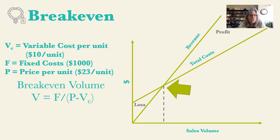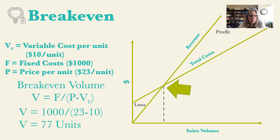What volume gives us zero profit — where the two lines cross? Plugging the numbers into the formula, we find that at 77 units those lines cross. If we sell more than 77 units we make a profit; if we sell fewer, we have a loss. That's the concept of break-even.